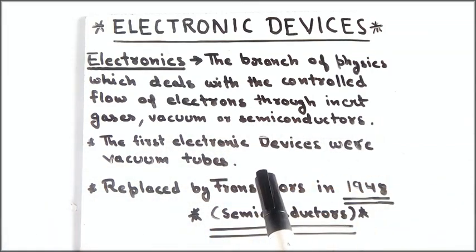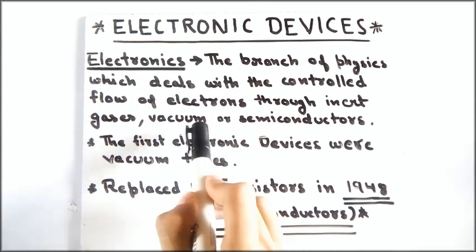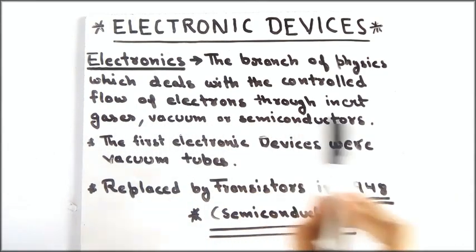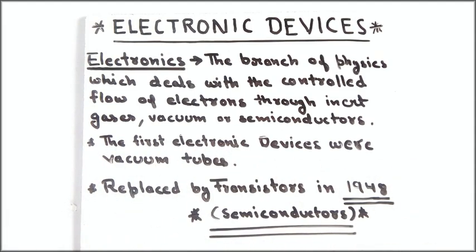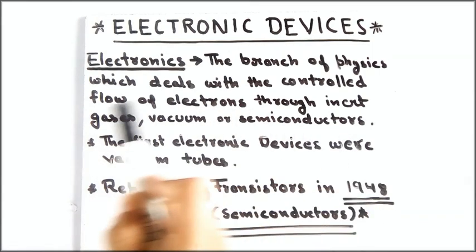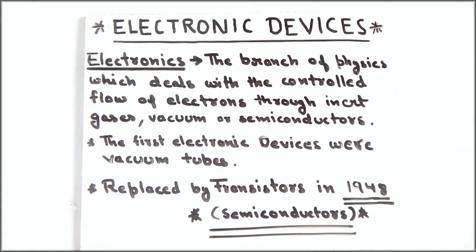Previously we used vacuum tubes, but now semiconductors are used as electronic devices. The first electronic devices were vacuum tubes, but these devices were really big — for a single computer it would take two to three rooms. So vacuum tubes were replaced by transistors, which are semiconductors, in 1948. Transistors were really small, that's why your mobile phones and computers are compact today.